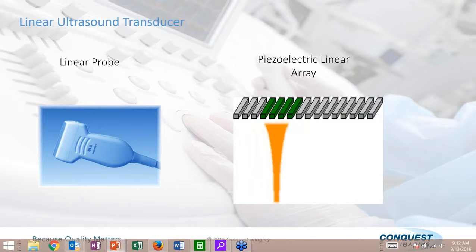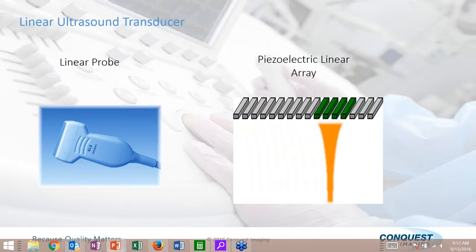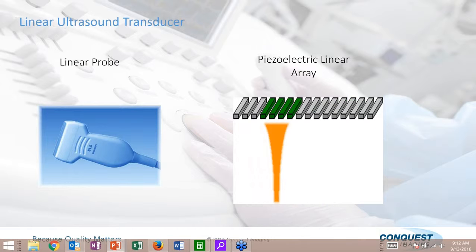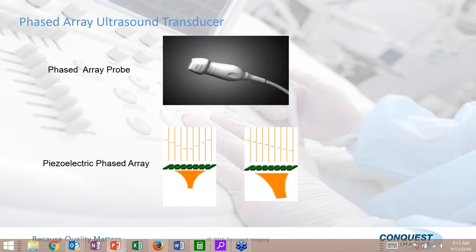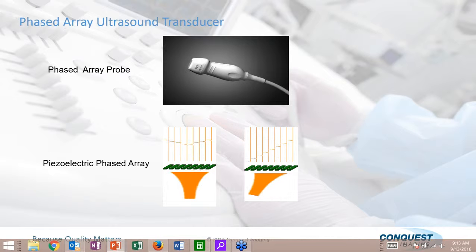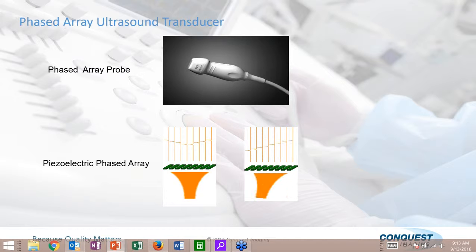With a linear probe, the ultrasound system fires the elements within a linear array transducer one at a time, very quickly, to create that linear type image. With a phased array transducer, we fire the elements virtually simultaneously but use variable timing on the pulses going to those crystals in order to steer the image. The first graphic shows firing the image straight on; the second shows timing the pulses to steer the image.